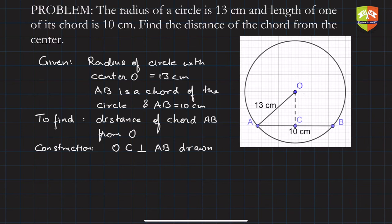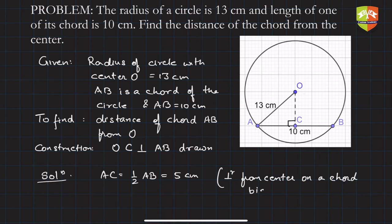OC perpendicular to AB is drawn, so this is 90 degrees. Now, solution: how to find the value of OC? AC equals half AB equals 5 centimeters, because a perpendicular from center on a chord bisects the chord.